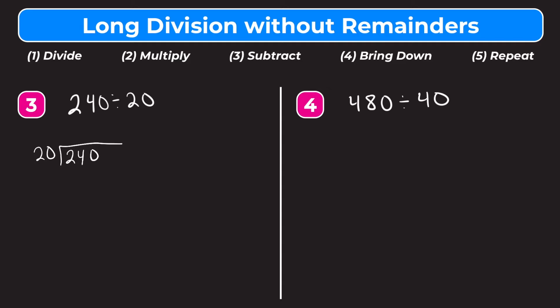We use both the 2 and the 4, making 24. How many whole groups of 20 go into 24? That's 1. Since we used both digits, the 1 goes on top of the 4, not the 2. Multiply: 1 times 20 equals 20. Subtract: 24 minus 20 equals 4. Bring down the 0. Repeat — how many whole groups of 20 go into 40? That's 2. Multiply: 2 times 20 is 40. Subtract: 40 minus 40 is 0. We've gone all the way to the ones column, so we're done.